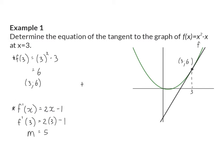Our last step is to calculate the y-intercept. At the moment we know that the equation is y is equal to 5x plus c, because we just calculated the gradient as 5. Next, we substitute the point of contact: y becomes 6 and x becomes 3, and now we can solve c. We'll see that the y-intercept is minus 9. This means the equation of the tangent at x is 3 is y is equal to 5x minus 9.